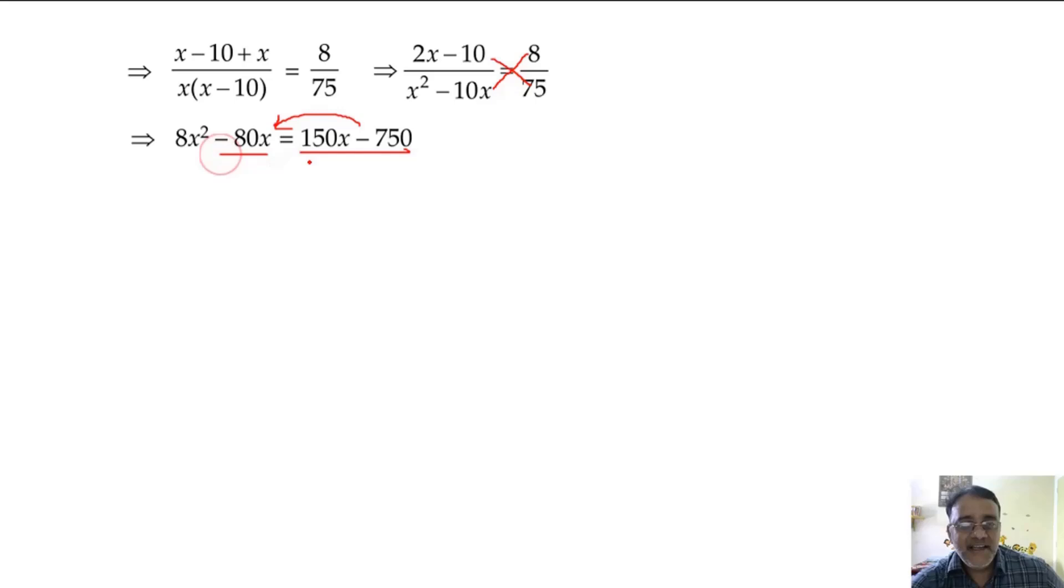Minus 80 minus 150x will become 230x, and this will become plus. Now we can divide everything. By what shall we divide? We'll divide it by 2. What will you get? 4x square minus 115x plus 375 equals 0.